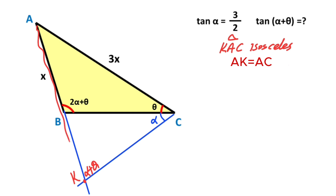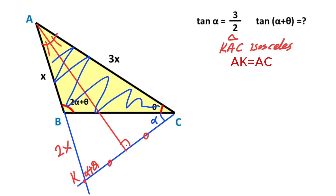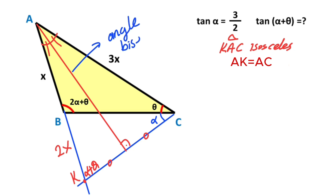So the length of AK must be equal to the length of AC. If these two sides are equal, that means 2x is left here. After that, if we draw a perpendicular line — we know that in an isosceles triangle, if we draw a perpendicular line the base will be divided into two equal parts. And here there is also an angle bisector. If you focus on triangle ABC, this line is an angle bisector.